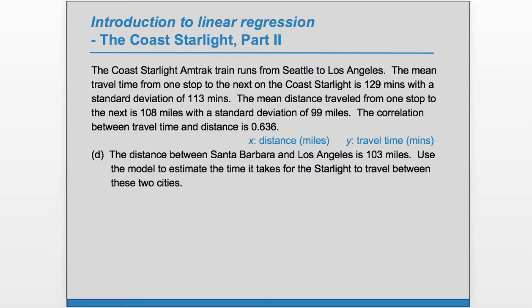Part D: The distance between Santa Barbara and Los Angeles is 103 miles. Use the model to estimate the time it takes for the Starlight to travel between these two cities.